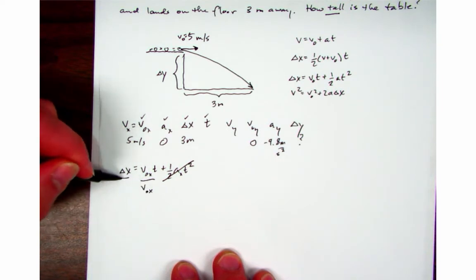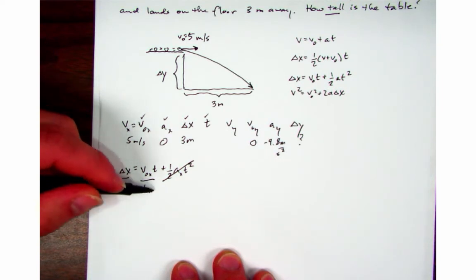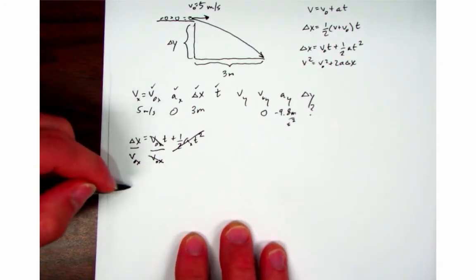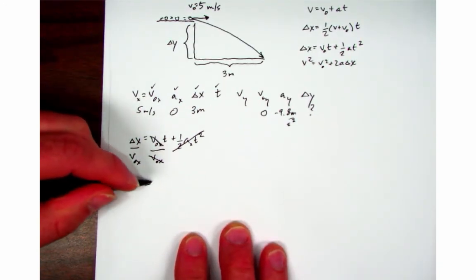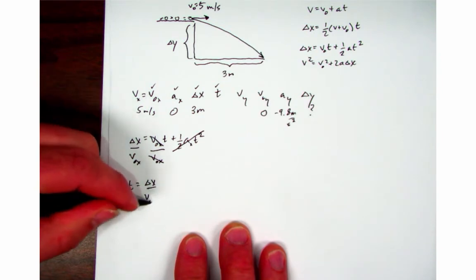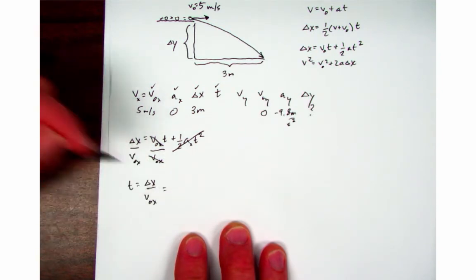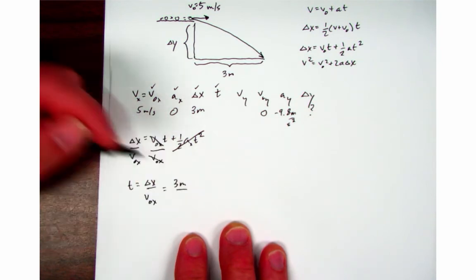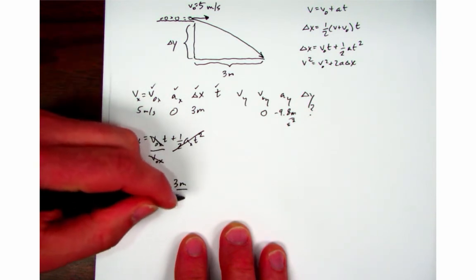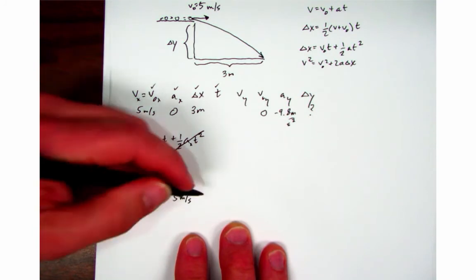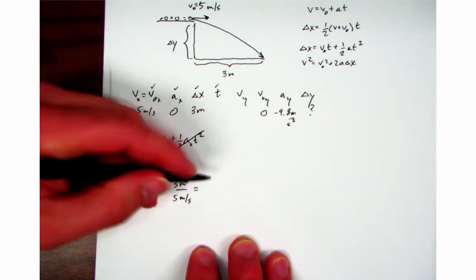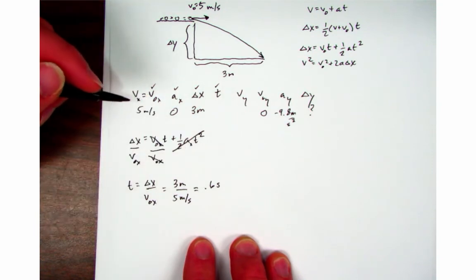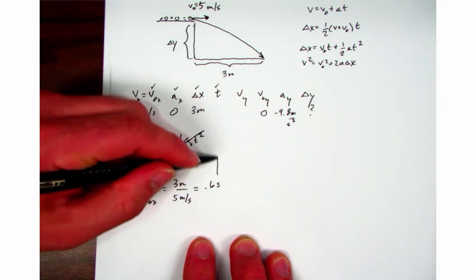So I'm going to divide both sides by v naught x. V naught x cancels out on this side and now I've got t equals delta x over v naught x. I'm going to plug in my numbers and I've got three meters divided by five meters per second and that equals 0.6 seconds. That's my time.